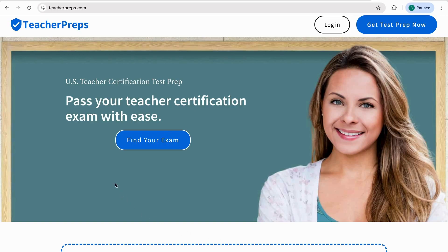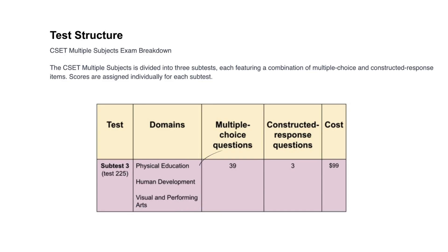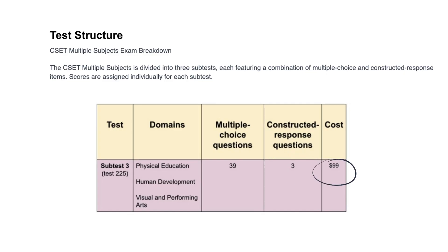Before we start, let's take a look at the test structure for Subtest 3. Subtest 3 covers three domains, which are physical education, human development, and visual and performing arts. It is composed of 39 multiple choice questions with three constructed response questions. This test costs $99.